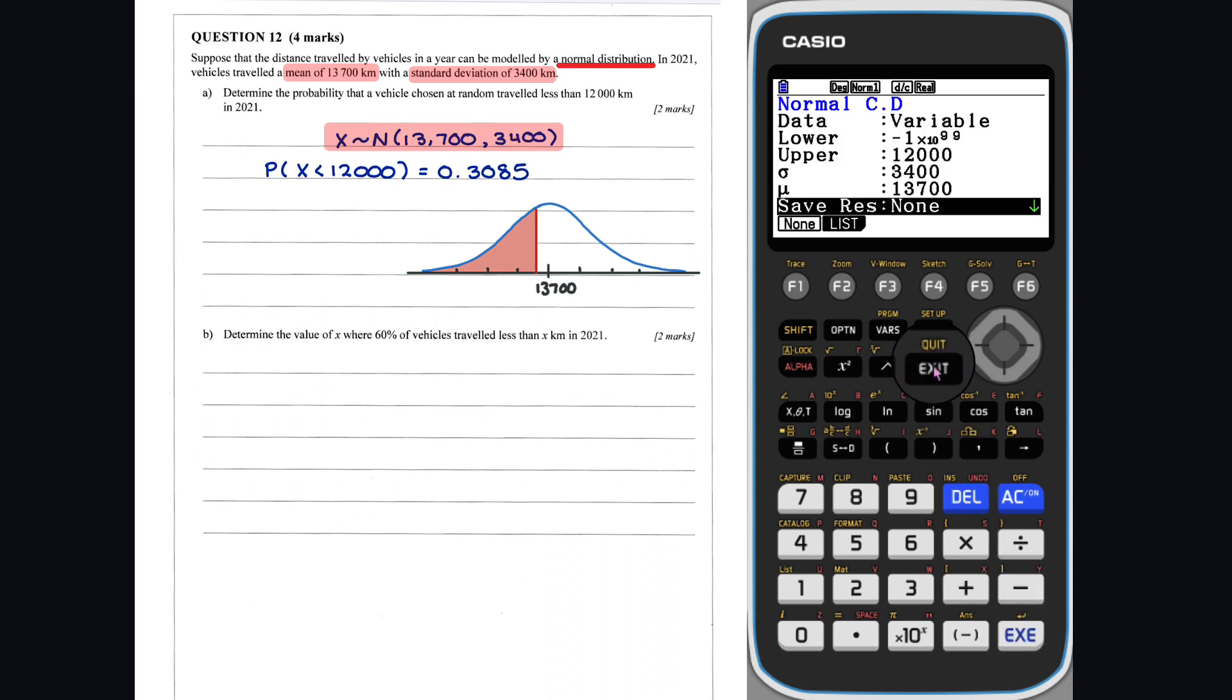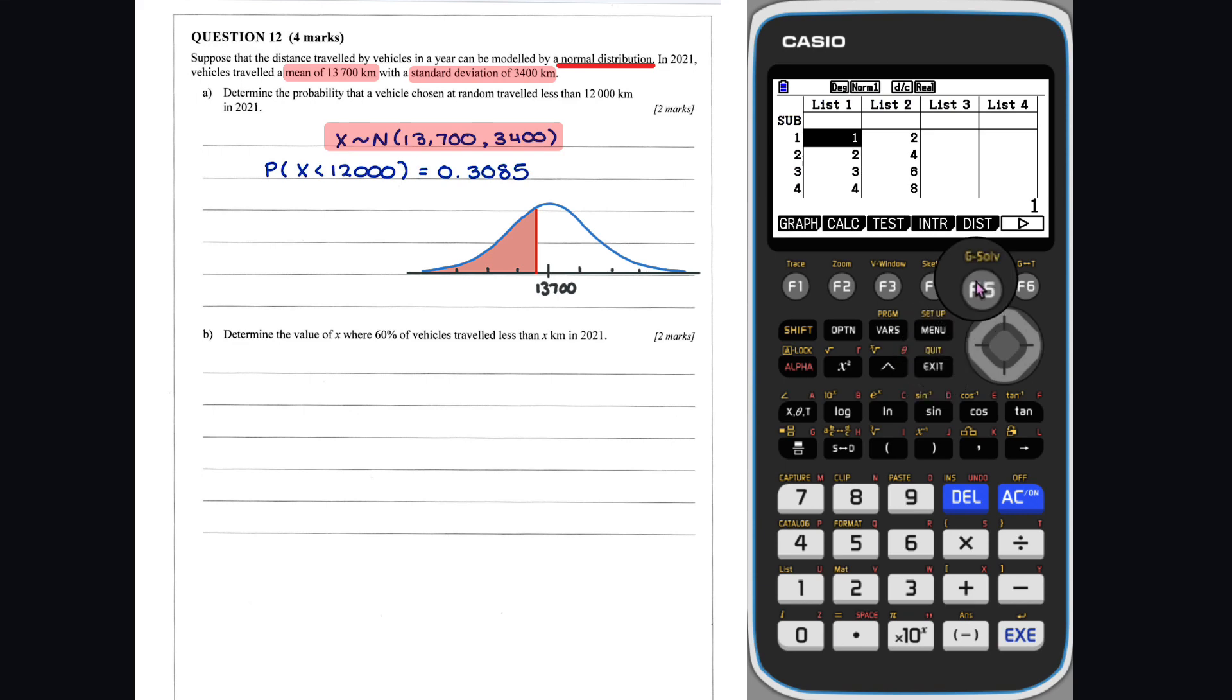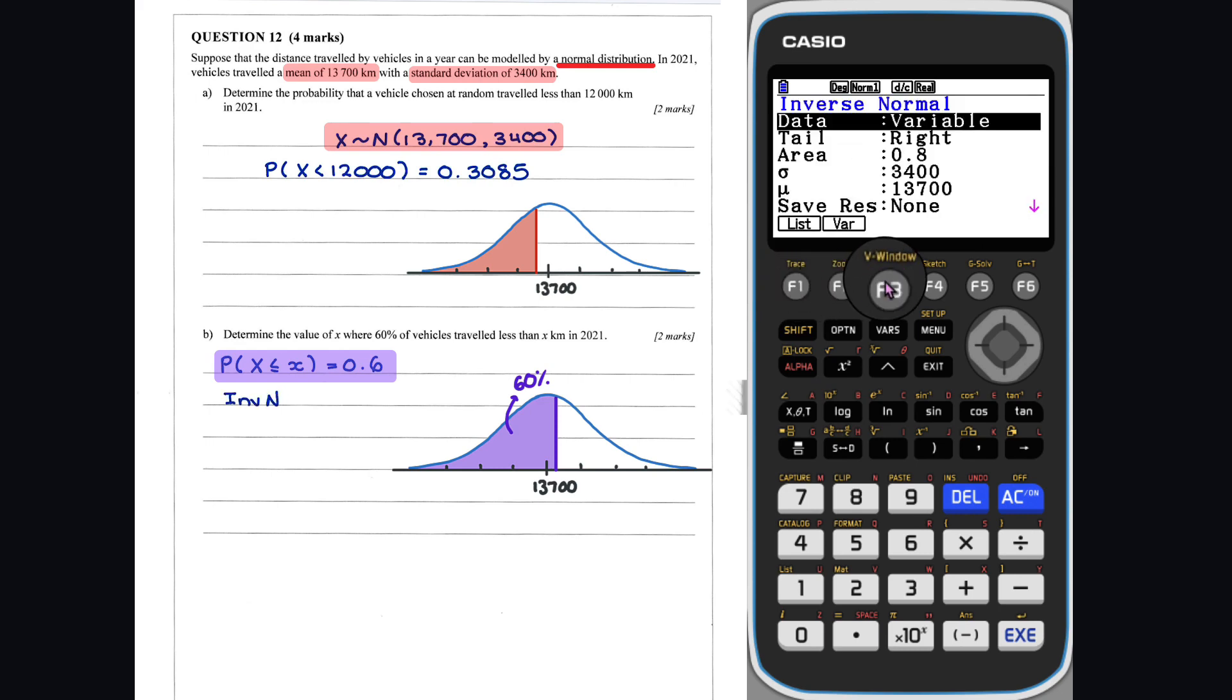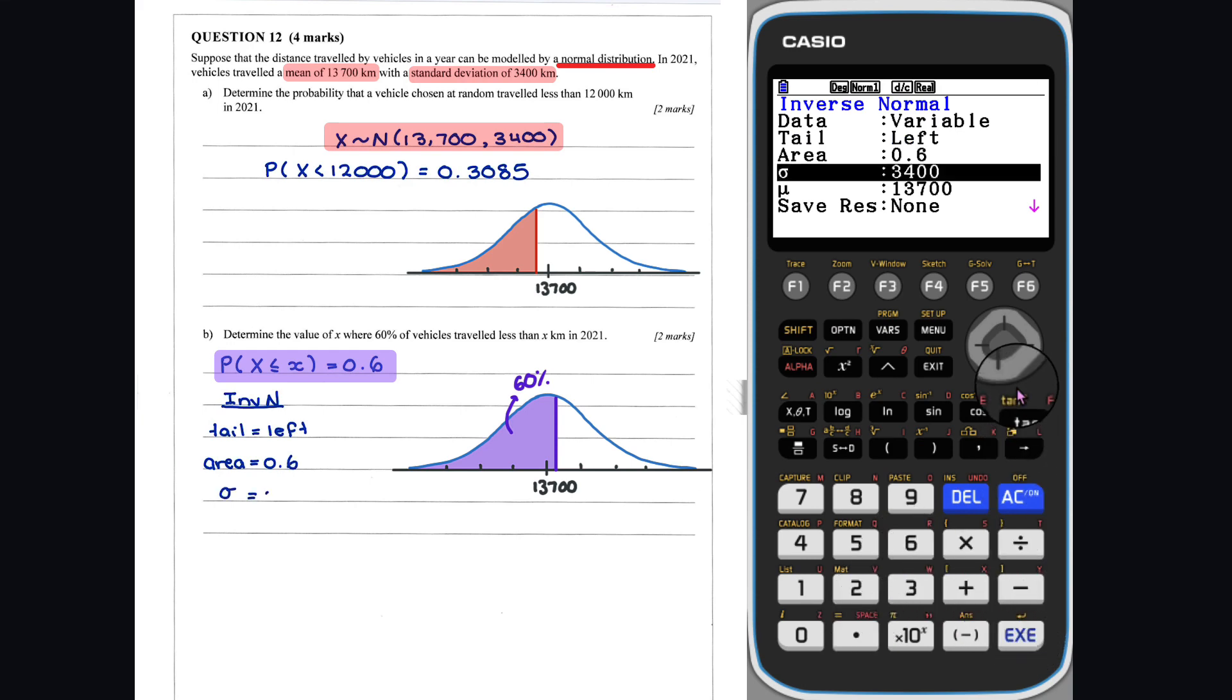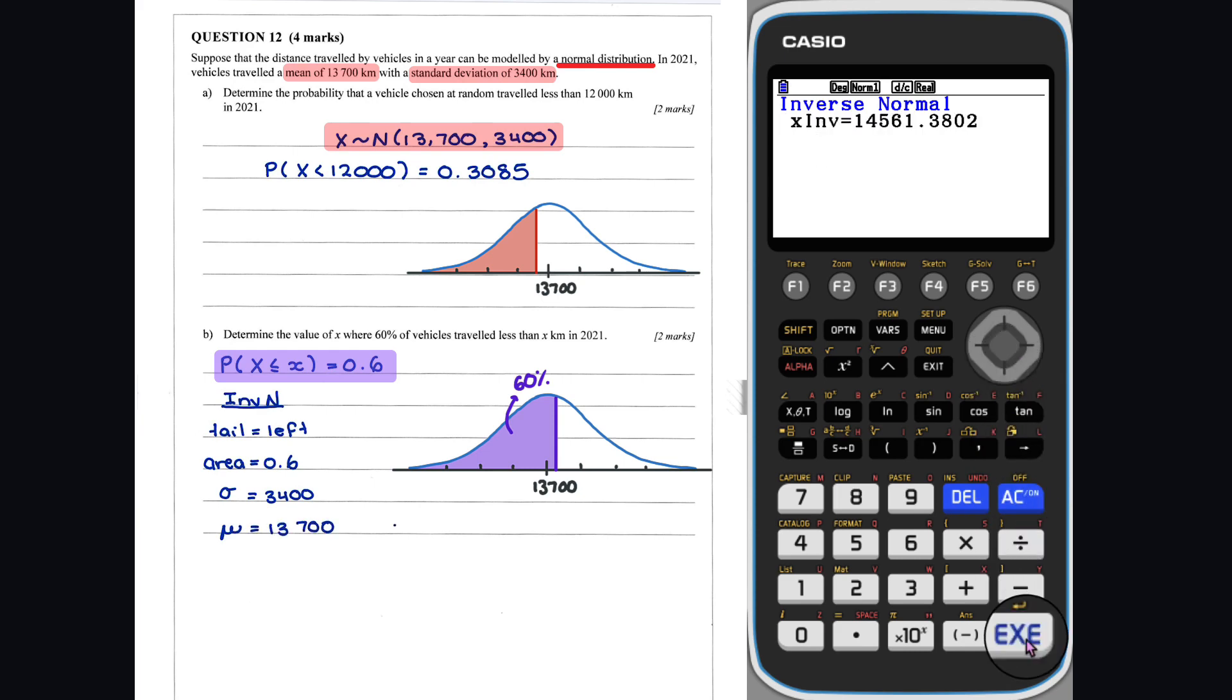Question 12 Part B: We now want to determine x such that 60% of vehicles travel less than x km in 2021. Entering the statistics mode, we need to use the inverse N feature. Our tail is left of x, the area is 0.6, and the standard deviation is 3,400. The mean is 13,700. Thus, x equals 14,561.38km, which means 60% of vehicles traveled less than approximately 14,562km.